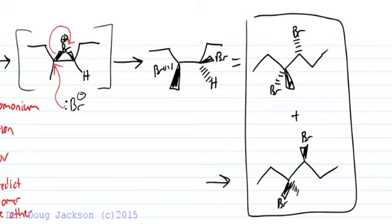This product would have originated from the cyclic bromonium forming on the bottom of the original alkene. This product would be the other product of the reaction.